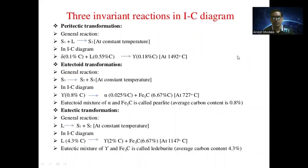Welcome to Engineering Materials and Metallurgy. Today we are discussing the iron-carbon equilibrium diagram applicable for steel and cast iron. The next point covers three invariant reactions in the iron-carbon equilibrium diagram. The first transformation is a peritectic transformation, where the general reaction is: S1 plus L gives S2 at constant temperature.